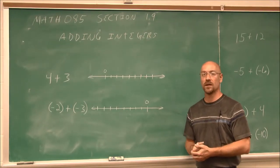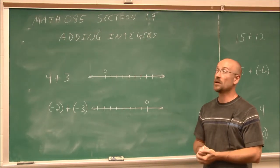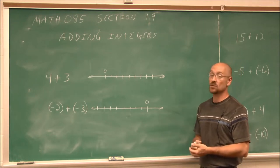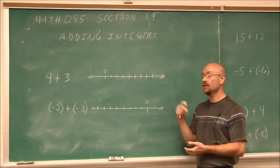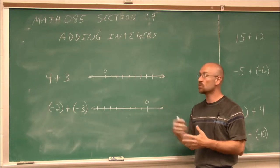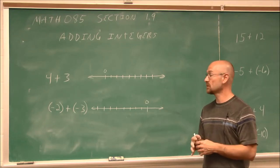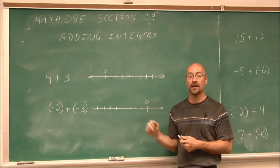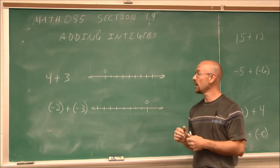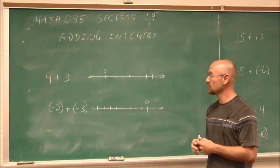Hello, and welcome to Bay College's video lectures for Math 085. Today we're going to look at section 1.9, which is the adding of integers. And as we've seen in the previous video, integers just include the positive and the negative values — the values to the right of 0 and the values to the left of 0.